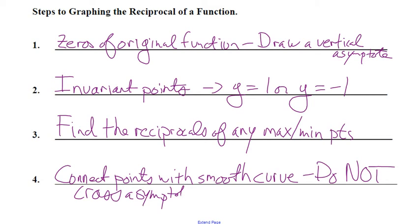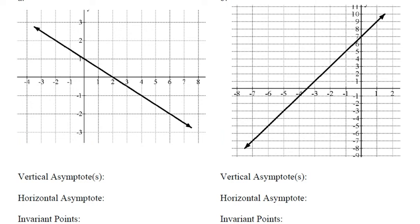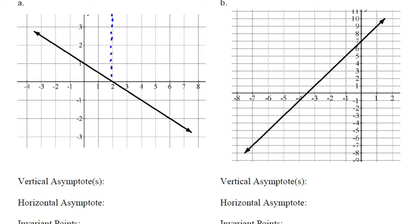The next couple of pages will practice this. The graph of y = f(x) is shown. Use the above steps to sketch the graphs and state all invariant points and the equations of the horizontal and vertical asymptotes. Step one: zeros of the original function become vertical asymptotes.